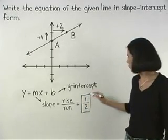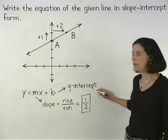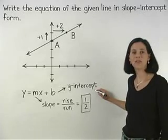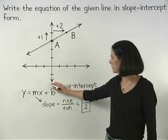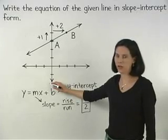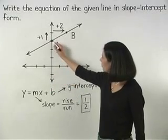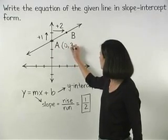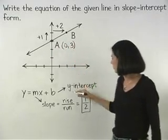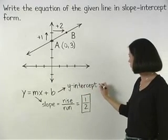Next, to find the y-intercept, remember that the y-intercept is the point where the line crosses the y-axis. And notice that our line crosses the y-axis at the point 0,3, which means that the y-intercept is 3.